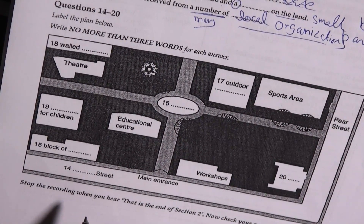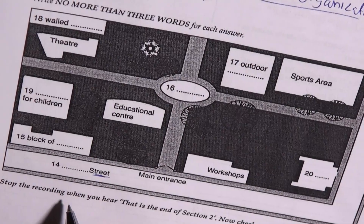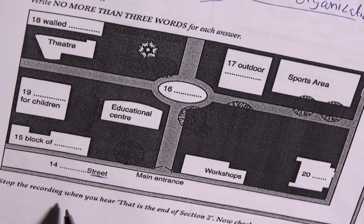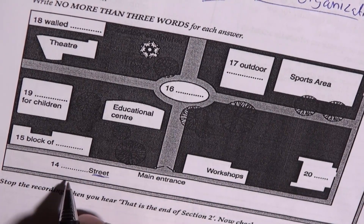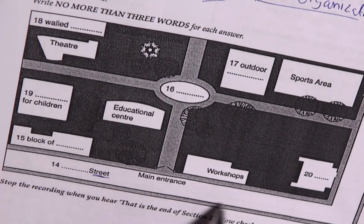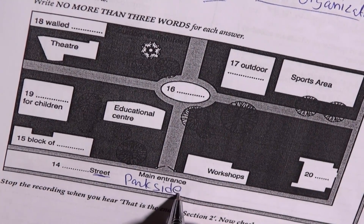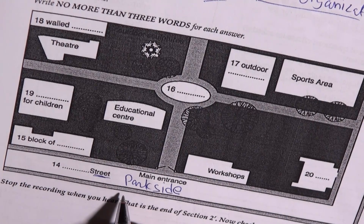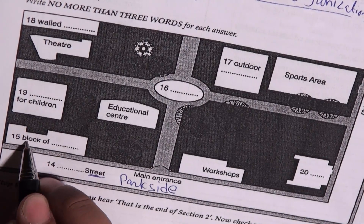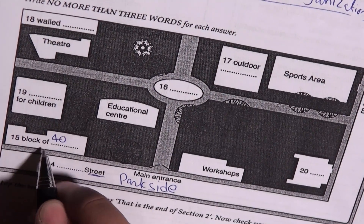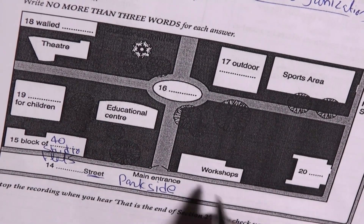Before you hear the rest of the talk, you have some time to look at questions 14 to 20. Now listen carefully and answer questions 14 to 20. Starting at the bottom, you can see Parkside Street where the main entrance to the park is. On the left of the entrance, in the bottom left-hand corner, there will be a block of 40 studio flats. On the other side of the entrance there will be some workshops for local businesses.